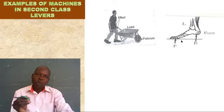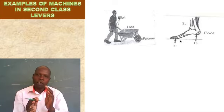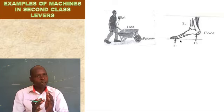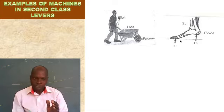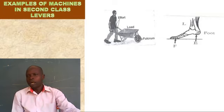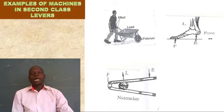That's why the human foot and wheelbarrow have the same arrangement. So we have classified them in a class of levers which we call second class levers, because the load is between the effort and the pivot. Can we get another tool and see? Are you following?